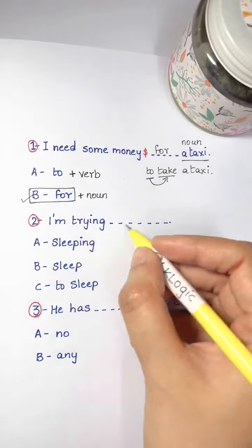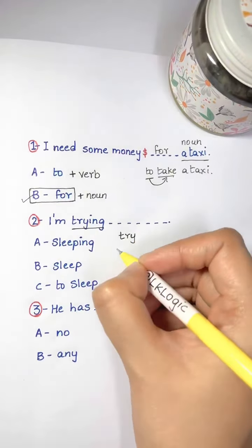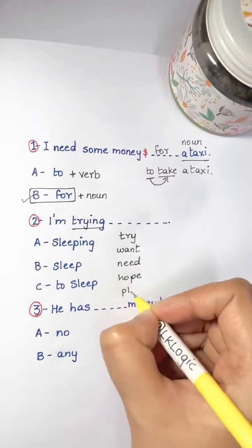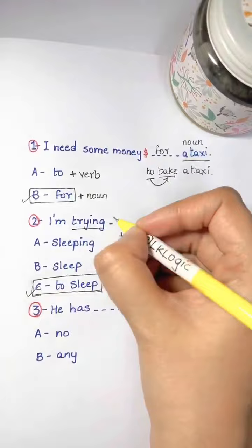Here, I'm trying dash sleeping, sleep, to sleep. What comes after trying? Remember guys, the verbs try, want, need, hope, plan—these verbs are followed by to plus the verb. So to sleep is the answer.